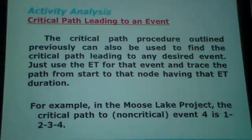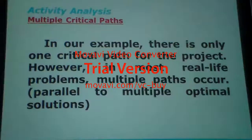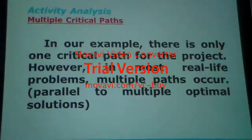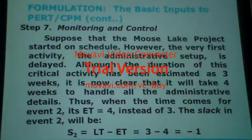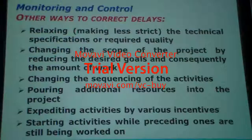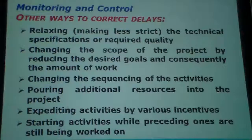Let's go to the critical path leading to an event that we solve in these two examples. In our example there is only one critical path for the project. However, in most real life problems, multiple paths may run parallel, giving multiple optimal solutions. In big projects there may be more than one critical path. How to calculate slack with these methods for each — let's come to PERT now. We'll finish with PERT, how to make the calculations.